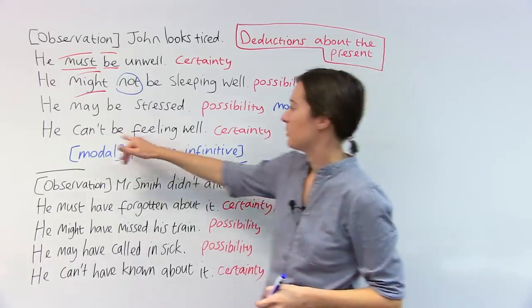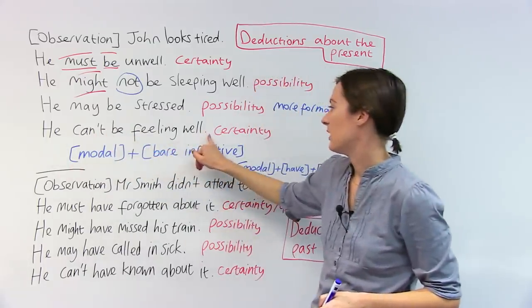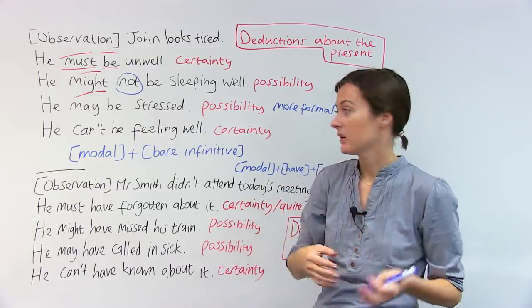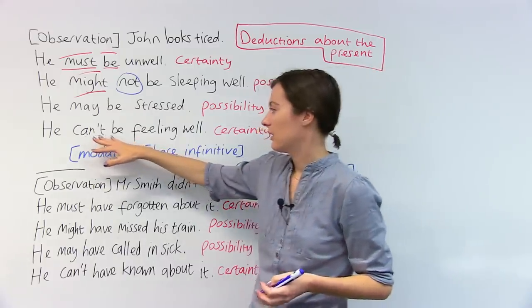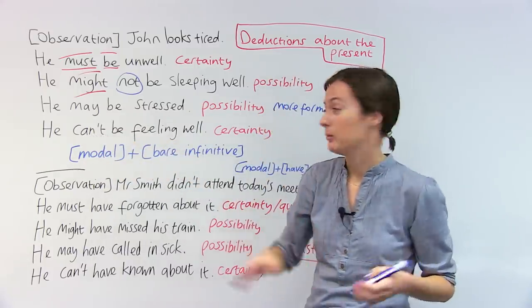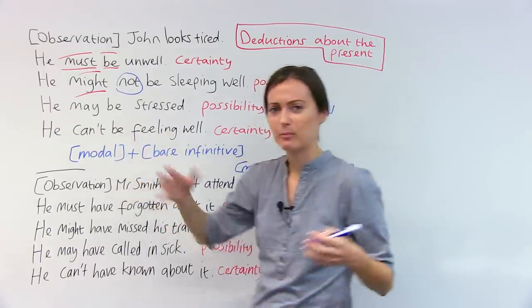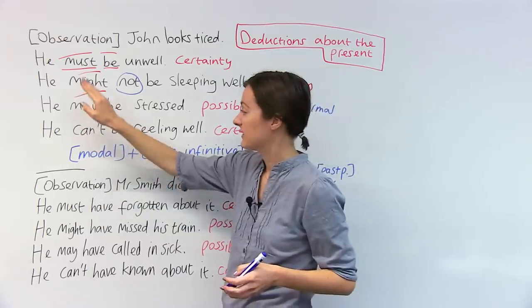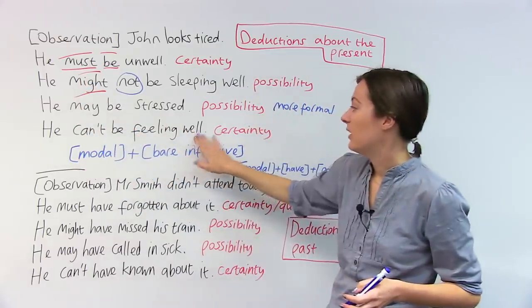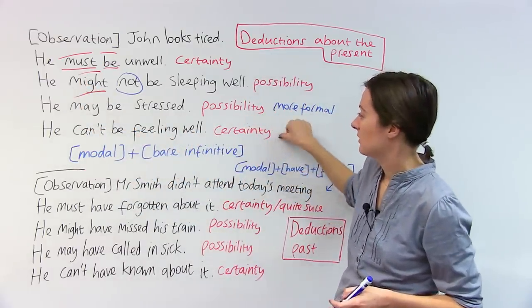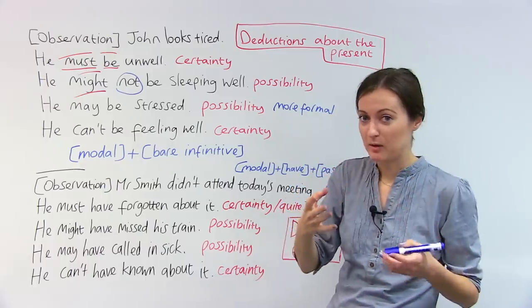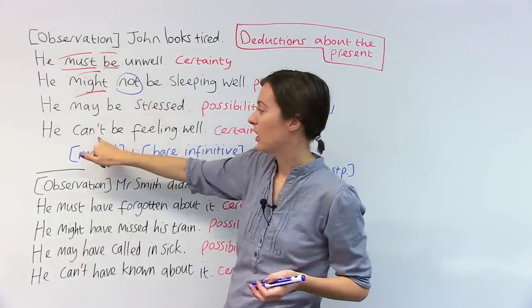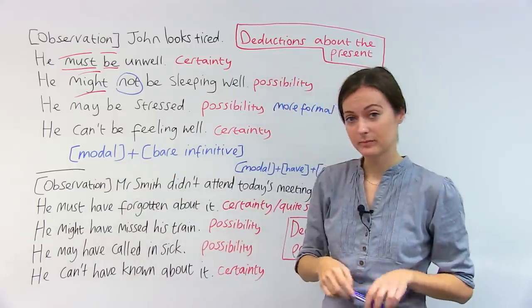And then, what about this one? He can't be feeling well. When we use can't to make a deduction, we always have to use it in the negative. We can't do it. He can be. It doesn't make sense as a deduction. It always has to be can't. So we can say he can't be feeling well. And this one, again, is certainty. So we could, if we're certain about our deductions, we would either use must or can't to do that.